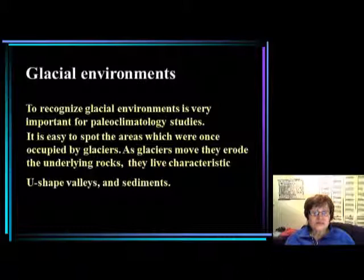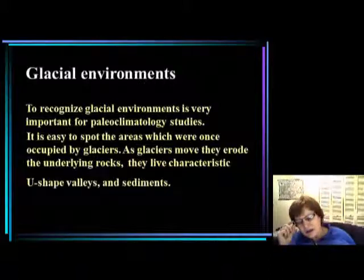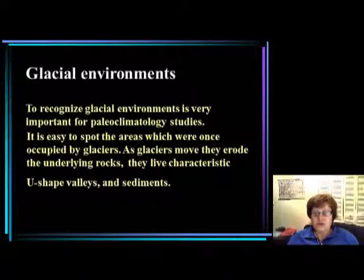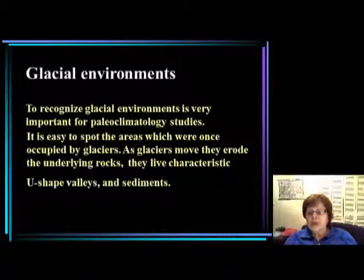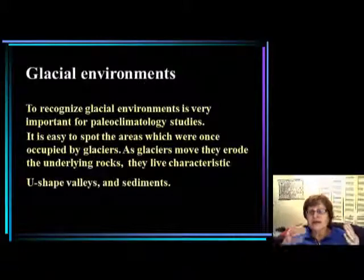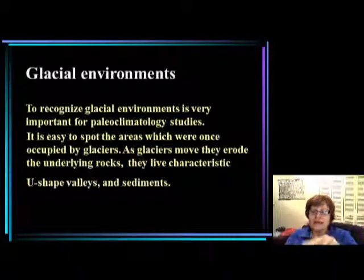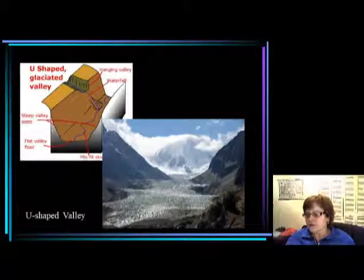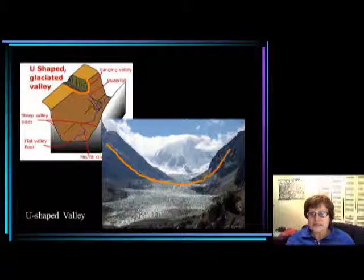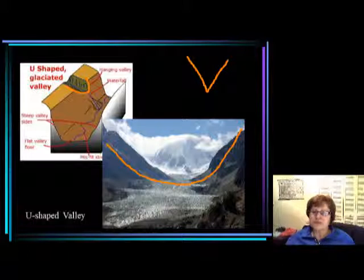The next one is the glacial environment, which is extremely important if you want to talk about previous ice ages. One of the main characteristics — if you can still see the valleys and mountains — is that in a glacial environment the ice makes typical U-shaped valleys, and the sediment is very characteristic too. You can see the U-shaped valleys in this figure, which still has some ice. Compare that to water erosion, which makes V-shaped valleys. So V-shape is the river and U-shape is the glacier.